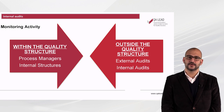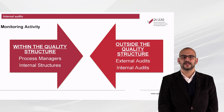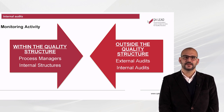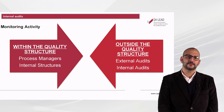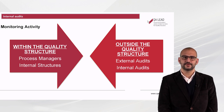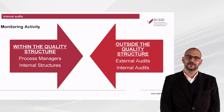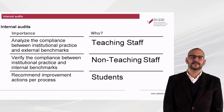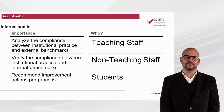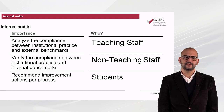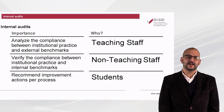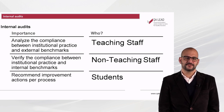Monitoring activities are, of course, done within the quality structure itself, whenever they are done by the process managers or whenever they are executed by internal structures. Nonetheless, they can and should also be done outside the quality structure to give the system other visions and other looks — first by external audit mechanisms, but also by internal audit mechanisms, which allow a broader view of the institution in the identified area of improvement. Internal audits play a key role in the evaluation of the quality system and should be an integral part of the quality framework, as they allow analysis of compliance between institutional practice and external benchmarks, verification of compliance between institutional practice and internal benchmarks, and recommendation of improvement actions per process.